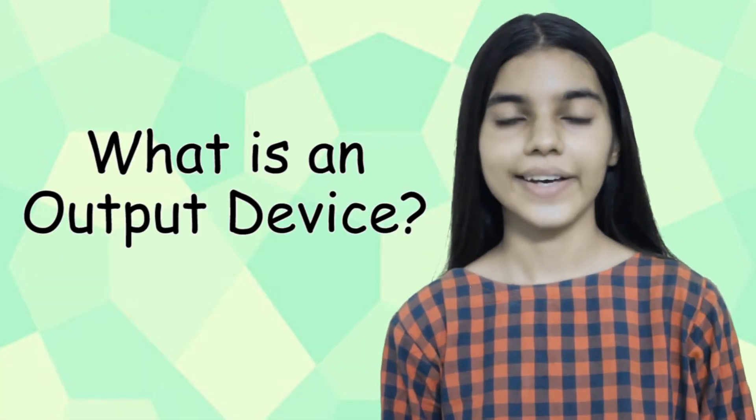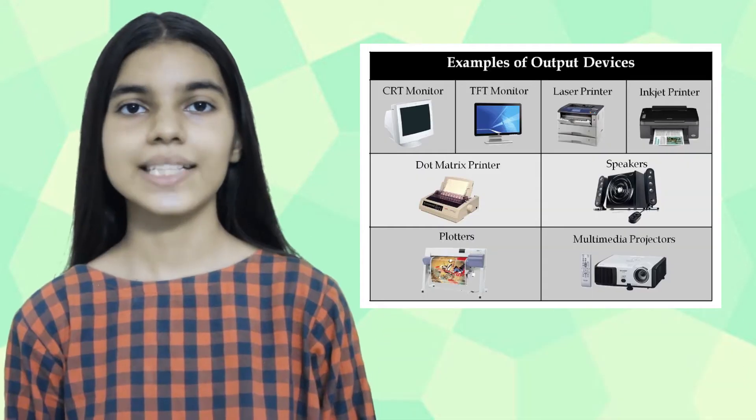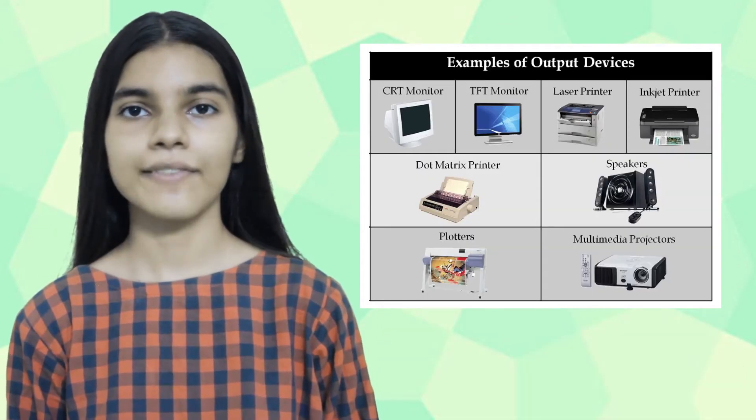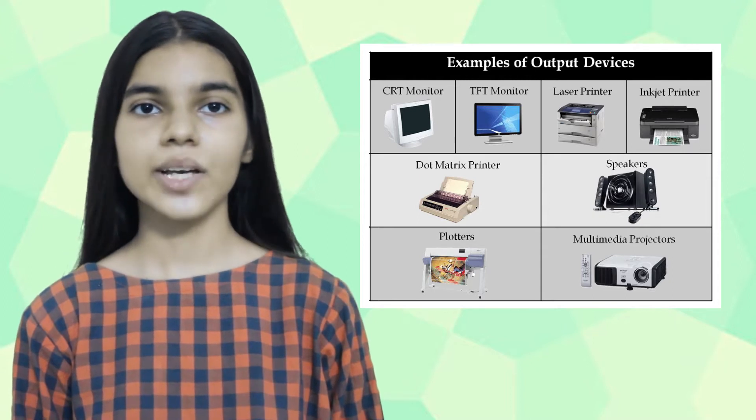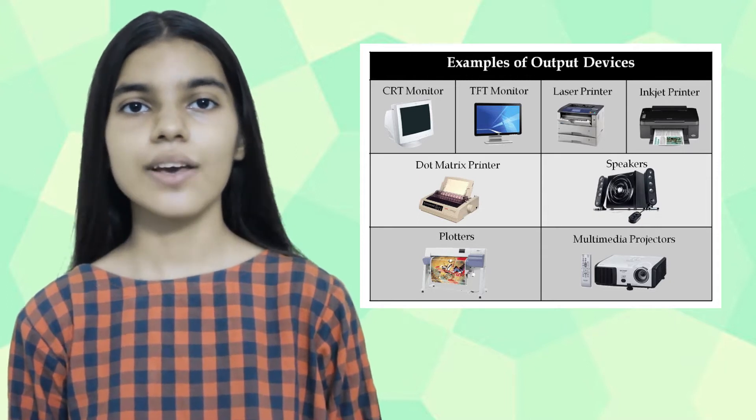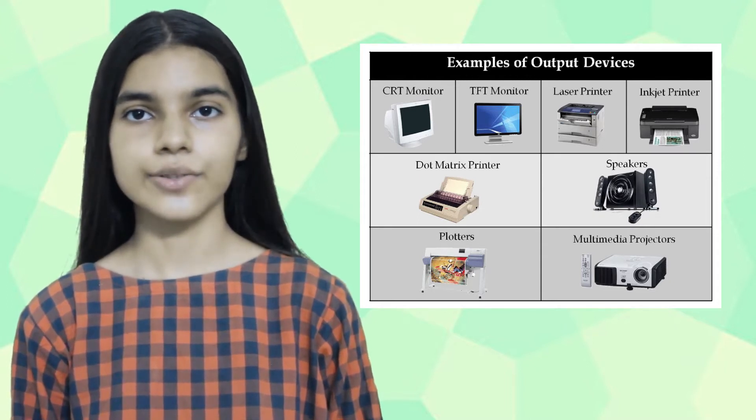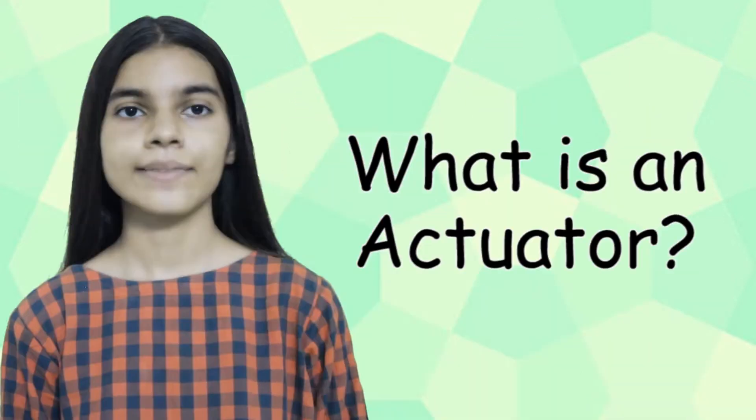What is an output device? An output device is any hardware device used to send data from a computer to another device or user. Examples: printers, monitors, speakers, projectors, headphones. A touchscreen is both an input and output device.